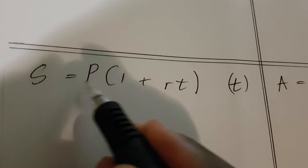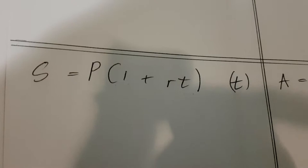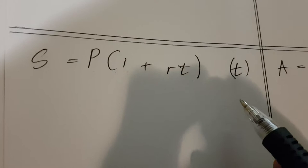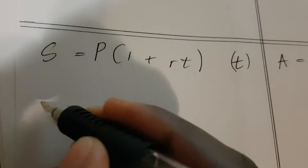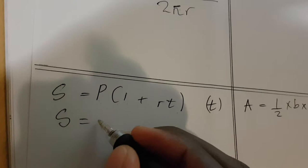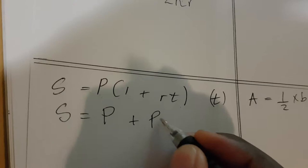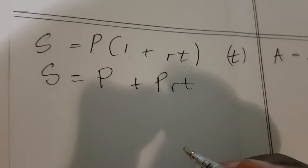Let's move to the next question: s = p(1 + rt), and they're asking you to make t the subject. Since t is inside the bracket, the first step is to clear the brackets. We multiply through by p, giving us s = p + prt.